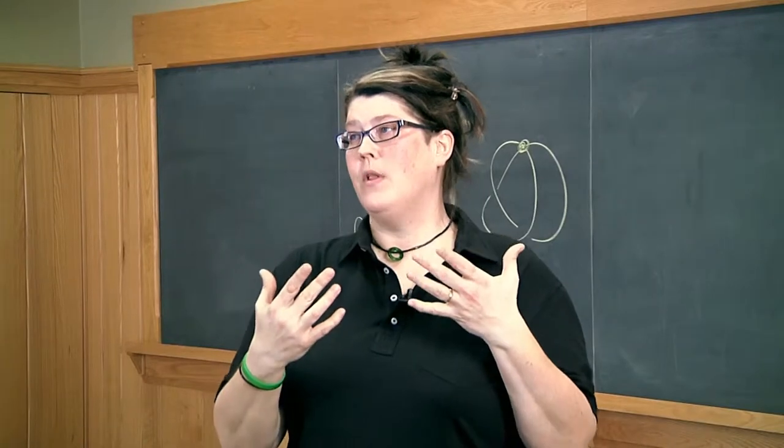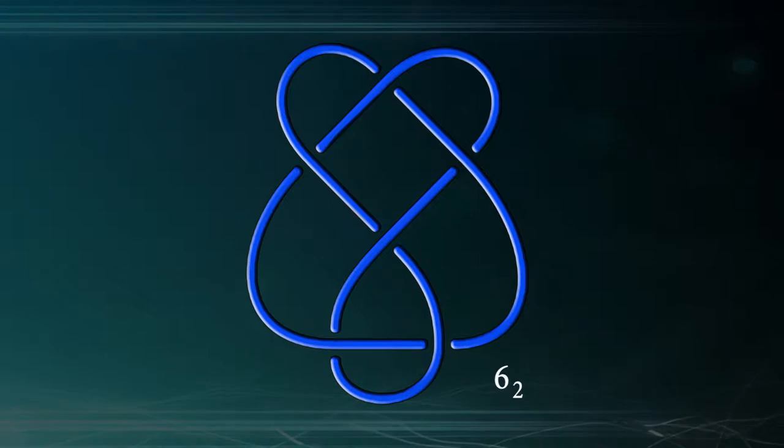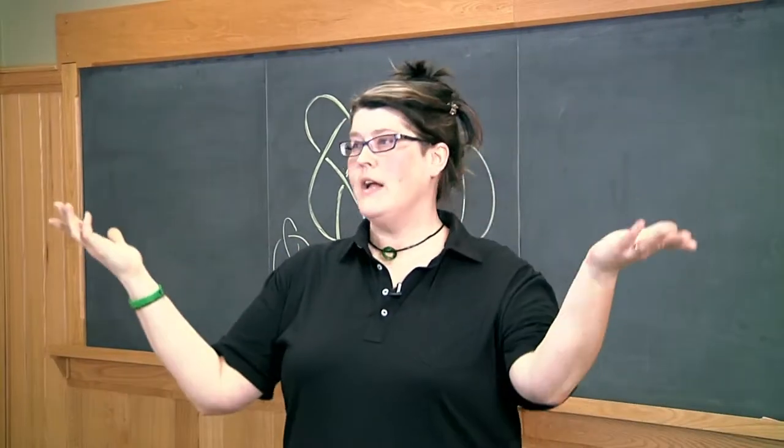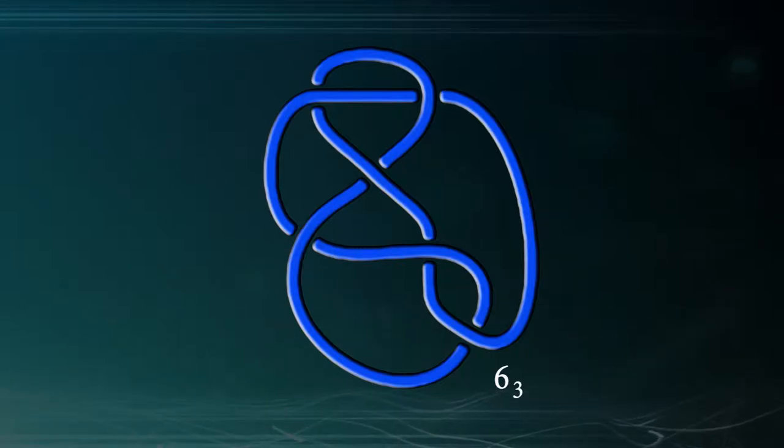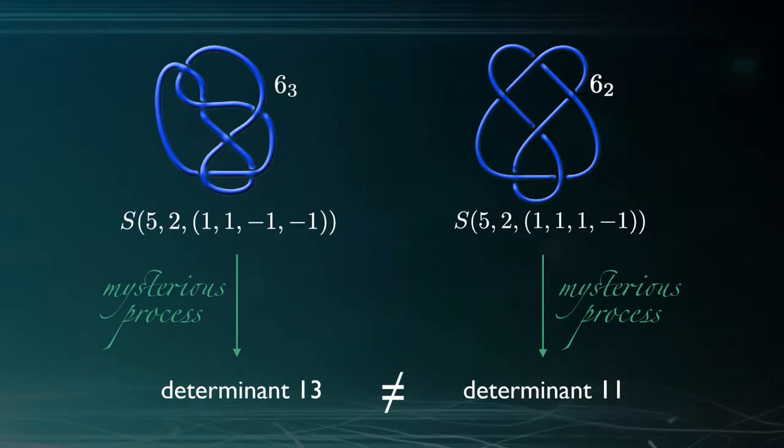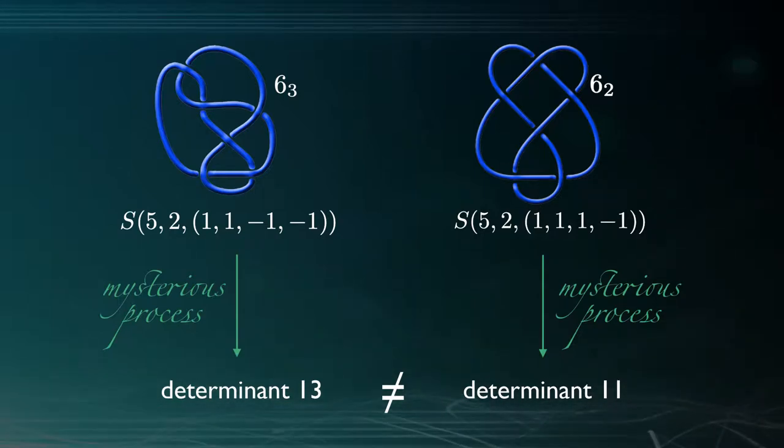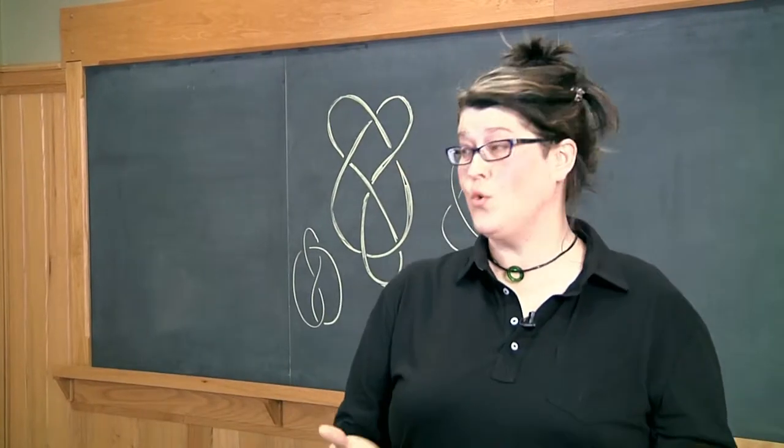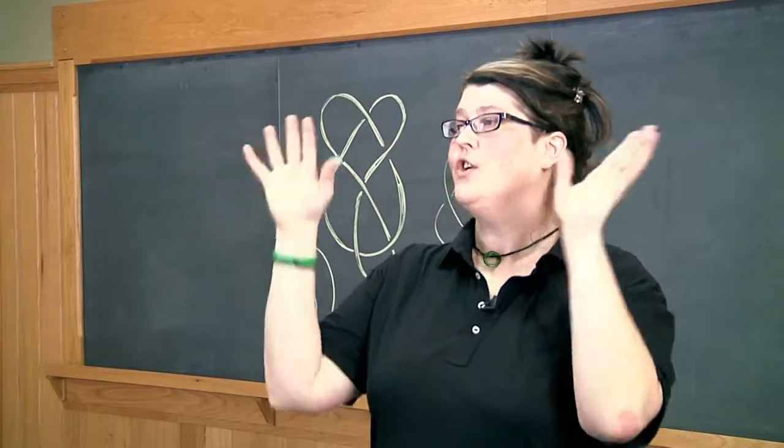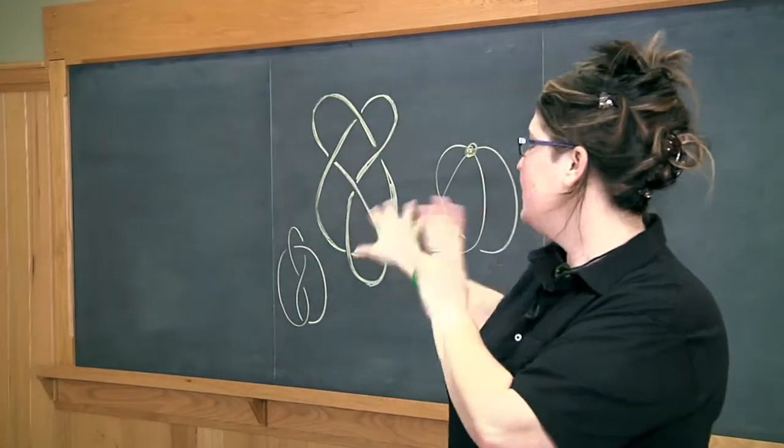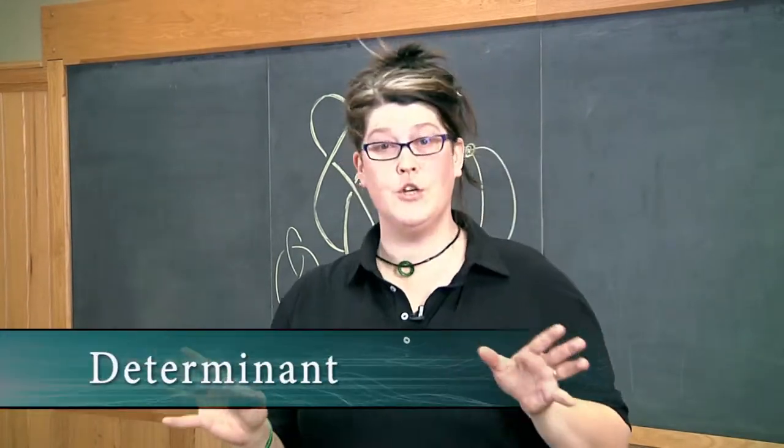For example, you might associate a number to each knot. Take knot 6-2 which you see on the board, the bold one there, and another knot say 6-3, the next one in the knot table, and you do some mysterious process that allows you to assign a number to each of those knots. That number I want to talk about is called the determinant. I don't want to get into the details because I just want to tell some stories in this video about how I'm using some technology. But rest assured there's a way that we could label the strands and crossings and create a matrix and take the determinant of minors, and that would be this thing we call the determinant.